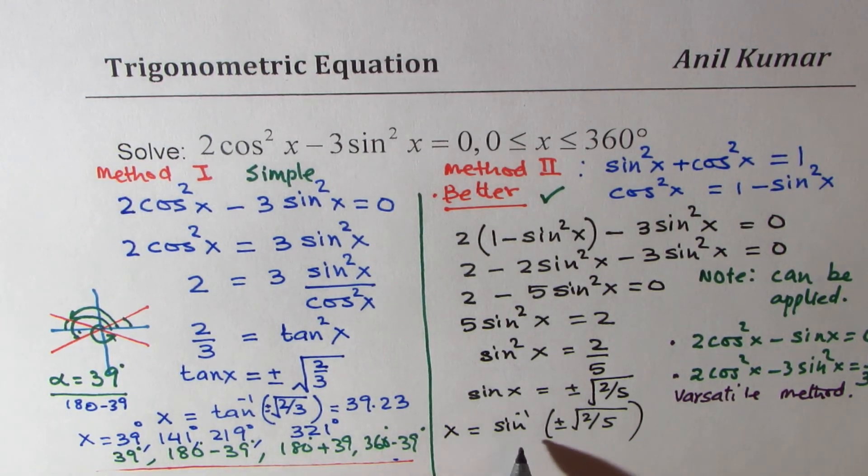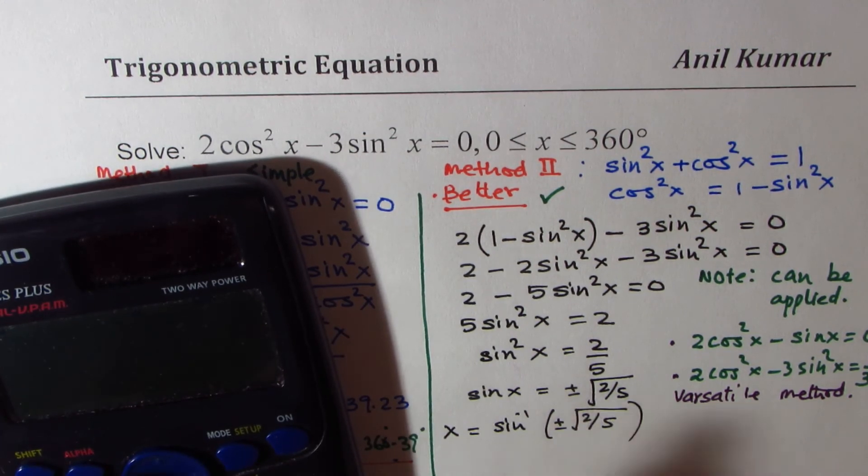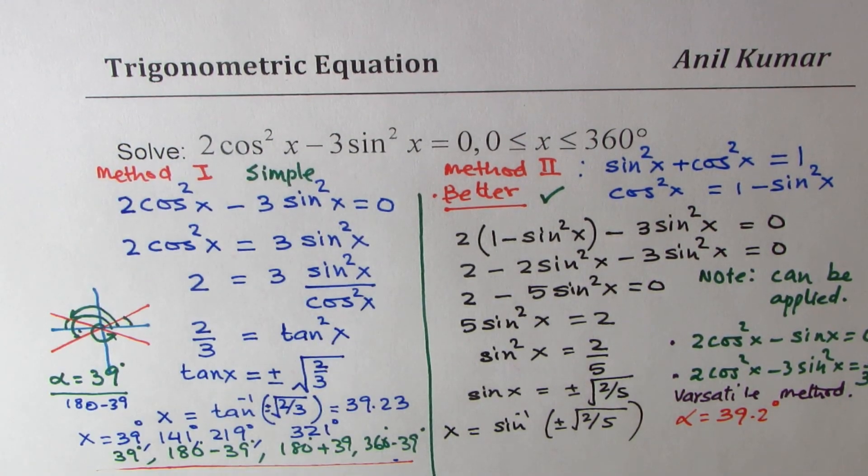You can use your calculator and find the answer for the next one, which is sin⁻¹. If I do shift sin⁻¹(√(2/5)), we again get alpha, the acute angle, as 39.2 degrees. So same answer. Either method could work for you, as I said.